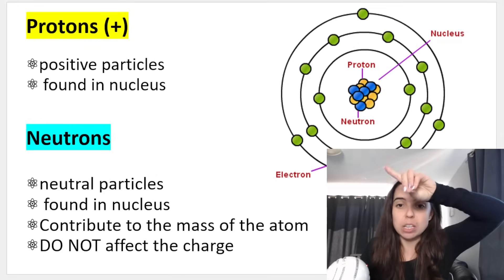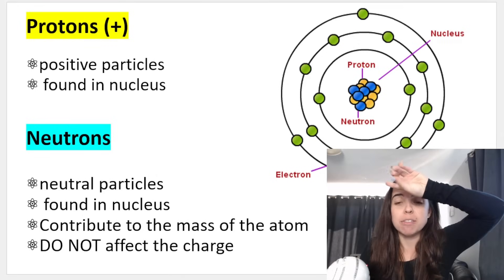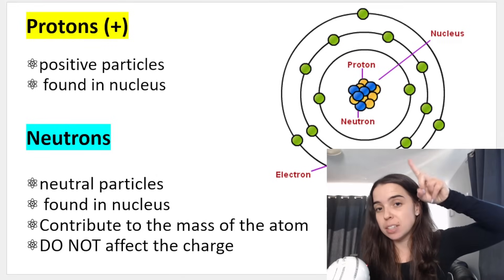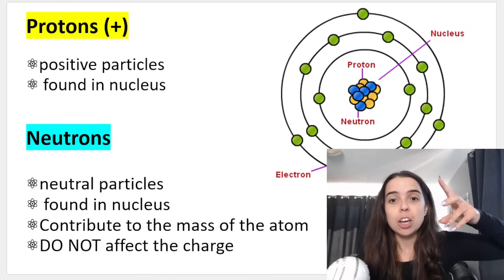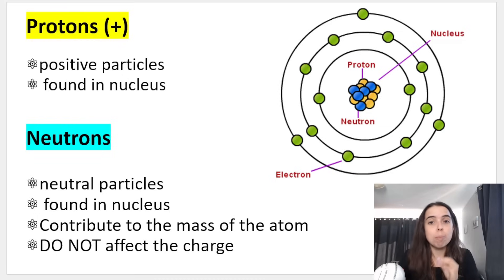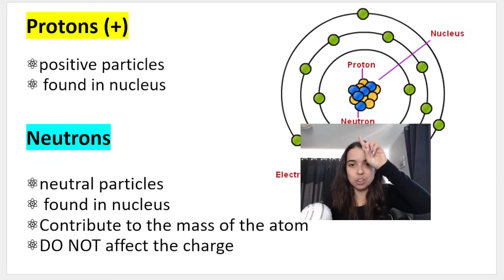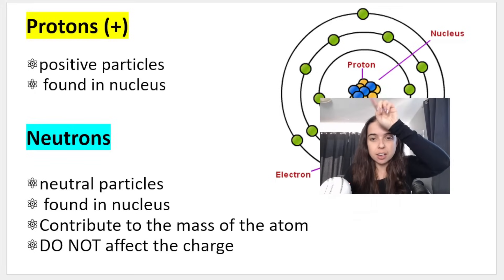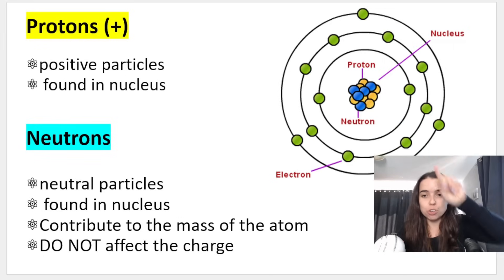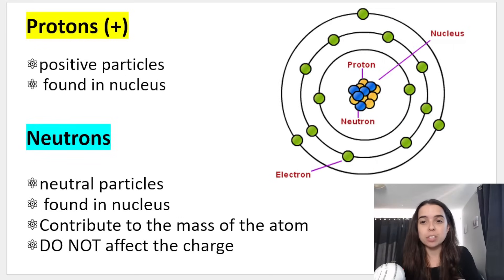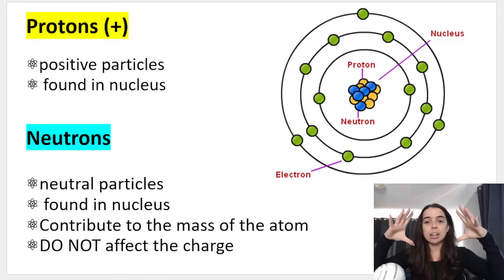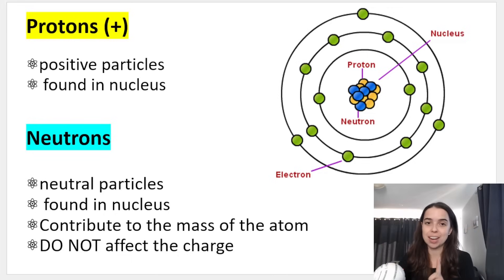Behind me you can see a very basic and simplistic diagram of the atom. You can see that I have positive protons and neutral neutrons in what we call the nucleus. The nucleus is the central portion of the atom — it's always at the center, and surrounding it are the orbitals where we find the electrons.